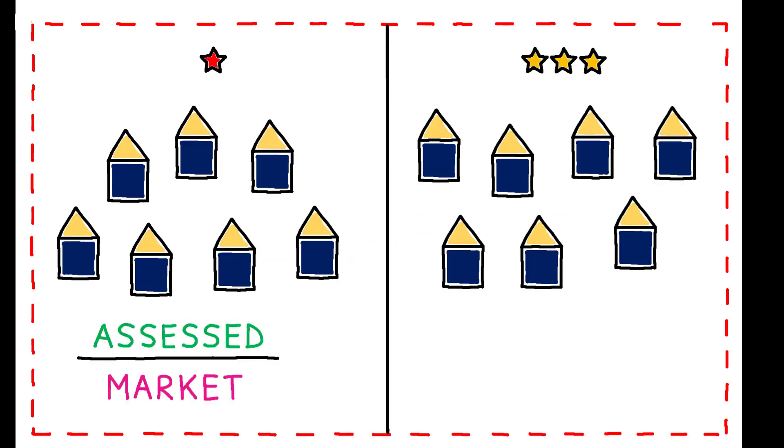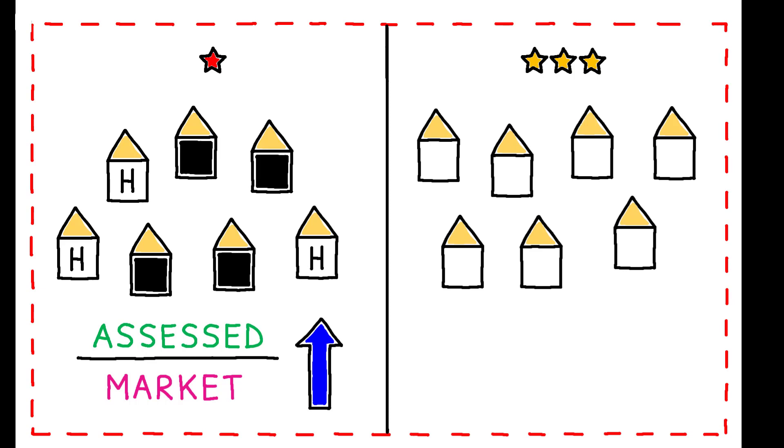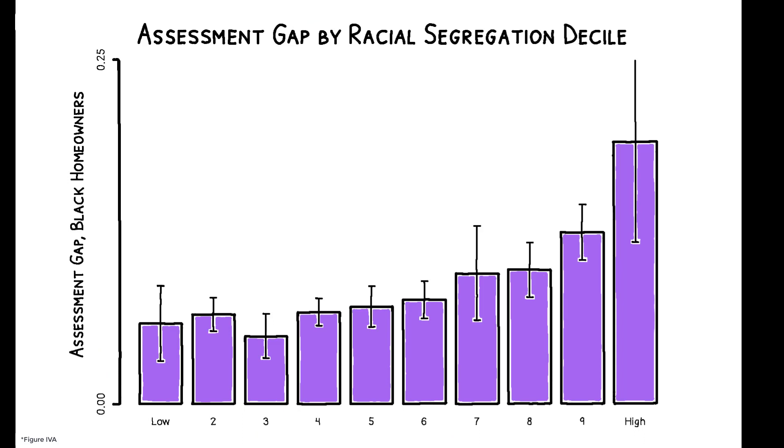Assessment ratios are higher for homeowners in worse neighborhoods, and the persistence of residential segregation in the U.S. leads this inequality to land disproportionately on minority residents. Consistent with this, racial assessment gaps are largest in counties with the highest levels of residential segregation.